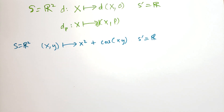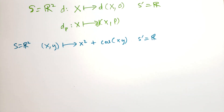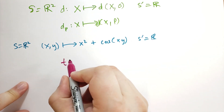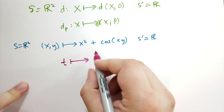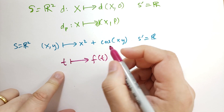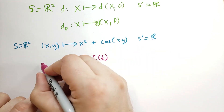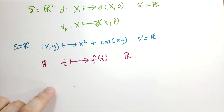Another example: at a given time T, let F(T) be the temperature of a certain body. Then F is a function of time. Over time T, we can define the temperature as some function F(T), which takes real numbers and maps to real numbers.